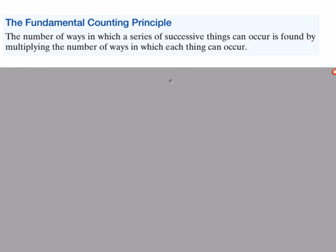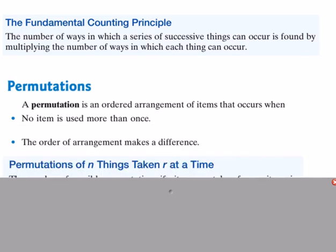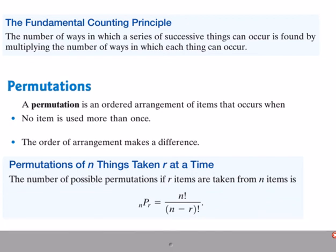The fundamental counting principle says: to find the total number of possible outcomes, multiply the number of choices at each step. For example, if there are 3 types of bread, 4 types of cheese, and 5 types of meat, the number of possible sandwiches is 3 × 4 × 5.